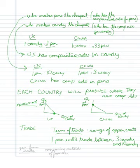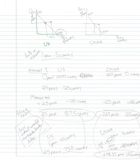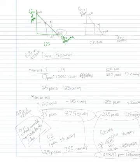What we can calculate is the gain from trade. The way the gain from trade is going to look is that I am consuming outside of my frontier. In the case of the U.S., although I can't produce outside of my frontier, I can consume outside of my frontier. The U.S. can have a consumption point outside of the production frontier — that's possible, and that's why we say that free trade benefits all.